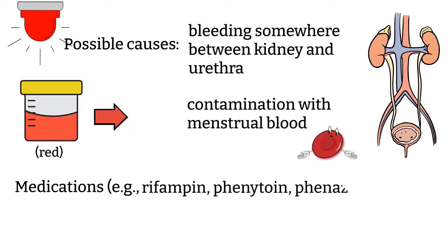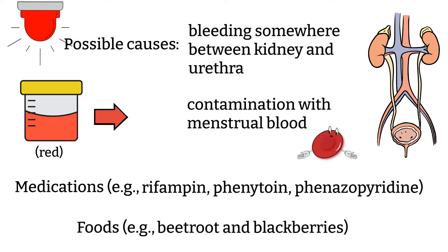Some medications can also cause urine to be red. Another reason that your urine could be red or has shades of red color is if you are eating a lot of beetroot or blackberries.